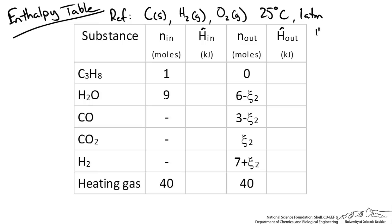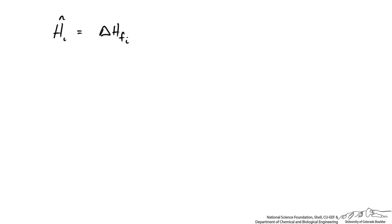We also use the heating gas at 800 degrees Celsius as its reference state, meaning its specific enthalpy at the outlet equals zero. The specific enthalpy of any species is: heat of formation at the reference state plus the sensible heat change (integral of Cp from 25°C to the target temperature). For both the heating gas and propane we use this formula directly; for other species we use table values.